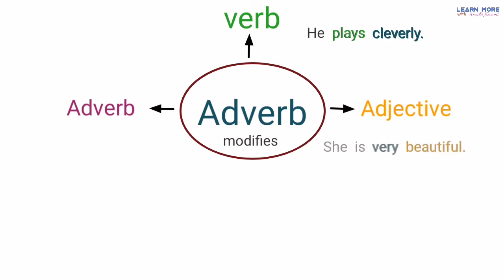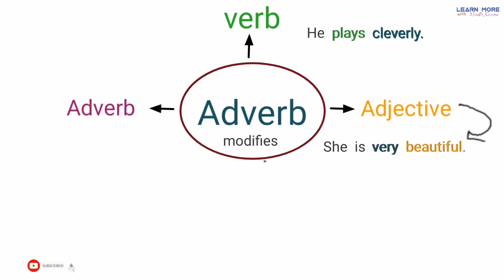She is very beautiful — woh bahut khubsoorat hai. Ab yahan par jo word 'beautiful' hai, yeh ek adjective hai kyunki yeh pronoun 'she' ke baare mein humein information de raha hai ke woh kaisi hai — beautiful, khubsoorat. Toh yeh hamara adjective hai, lekin 'very' ek adverb hai jo is adjective ke baare mein humein zyada information de raha hai ke woh khubsoorat toh hai lekin kitni? Very beautiful — bahut khubsoorat.